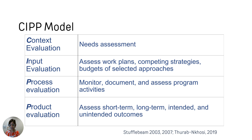The first P is process evaluation — is it being done? As you are delivering your content, you will want to monitor, document, and assess the program activities. The final P is product evaluation — did it succeed? This is where you would assess short-term, long-term, intended, and unintended outcomes.